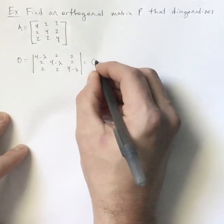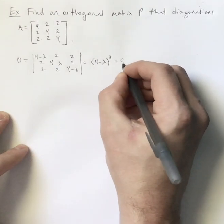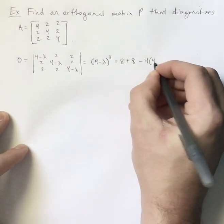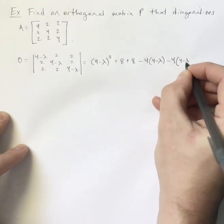And so this ends up being, let's see, when I were to do this out, 4 minus lambda cubed plus 8 plus another 8 minus 4 times 4 minus lambda. In fact, we have three copies of that being subtracted.